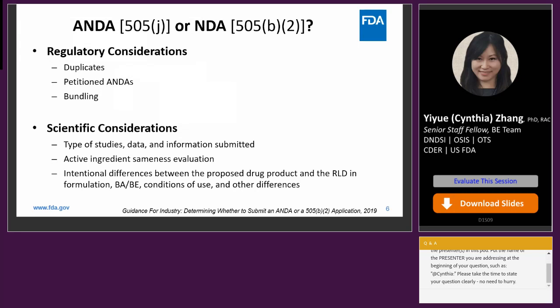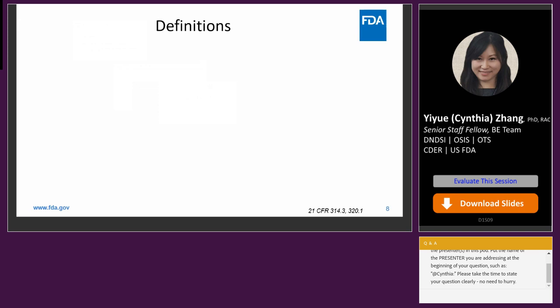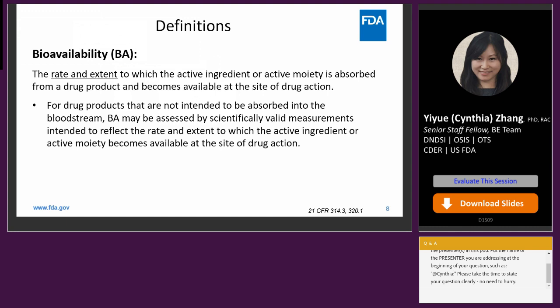CFR Title 21, Part 320 specifies the important regulatory requirements for bioavailability and bioequivalence. Bioavailability (BA) is defined as the rate and extent to which the active ingredient or active moiety is absorbed from a drug product and becomes available at the site of drug action. For drug products not intended to be absorbed into the bloodstream, BA may be assessed by scientifically valid measurements reflecting the rate and extent to which the active ingredient or active moiety becomes available at the site of drug action.